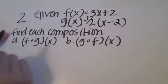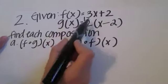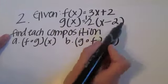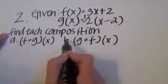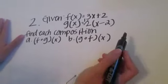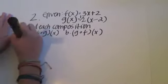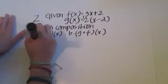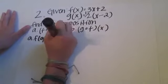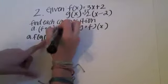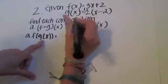The next problem: given that f of x equals three x plus two and g of x equals one half x minus two, we have to find the compositions of f of g of x and g of f of x. We're finding the same thing, just with the functions flipped. To find the first one, we rewrite the problem as f of g of x.